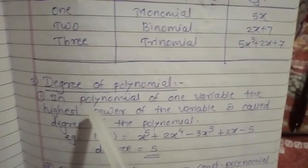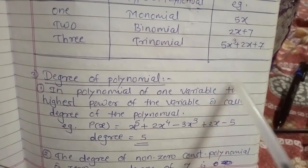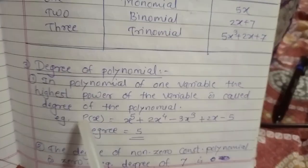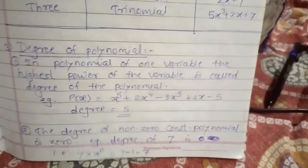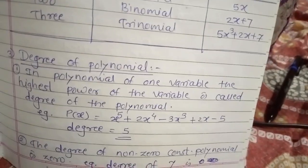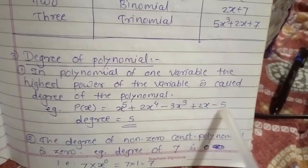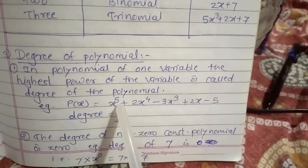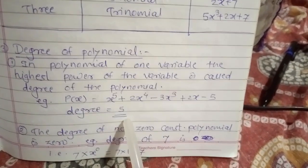After that we are going to see the degree of the polynomial. In a polynomial of one variable, the highest power of the variable is called the degree of that polynomial. For example, if we are given v(x) = x^5 + 2x^4 - 3x^3 + 2x - 1, the variable with the highest power is 5, so the degree of this polynomial is 5.